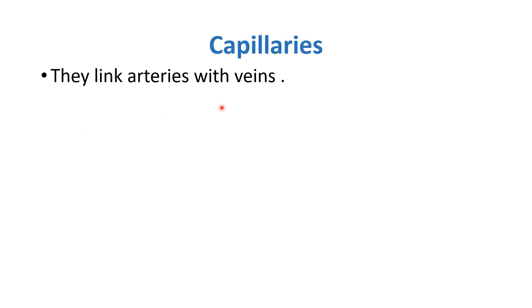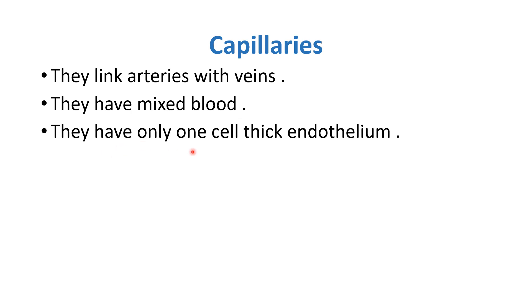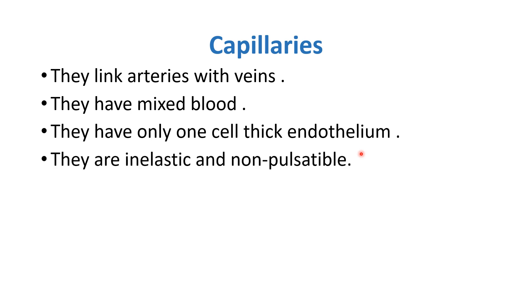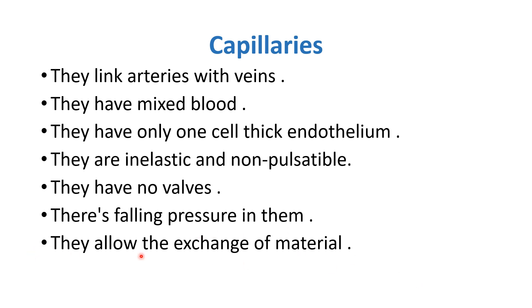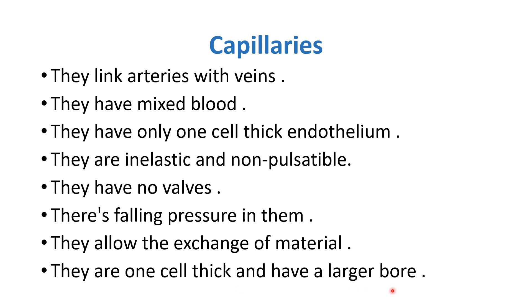The last type of blood vessels are capillaries. They link arteries with veins. They have mixed blood inside them — neither fully oxygenated nor deoxygenated. They have only a one-cell-thick endothelium — no extra layers. They are inelastic and non-pulsatable. They have no valves. There is falling pressure continuously inside them. They allow the exchange of material — unlike arteries and veins. Their bore is very large, and their thickness is only one cell thick.